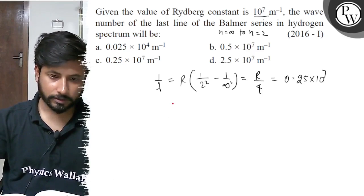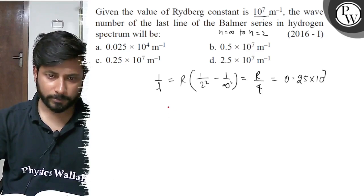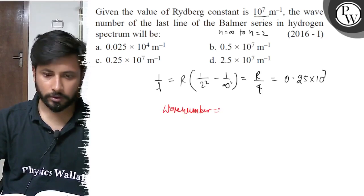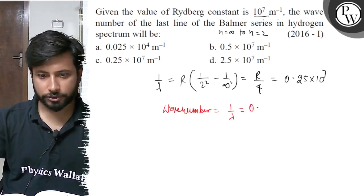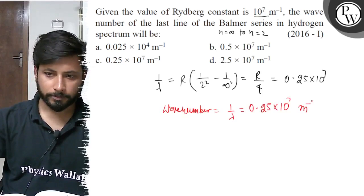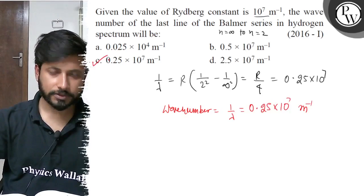So the wave number 1/λ equals 0.25 × 10^7 per meter. The final answer is option C. Best of luck!